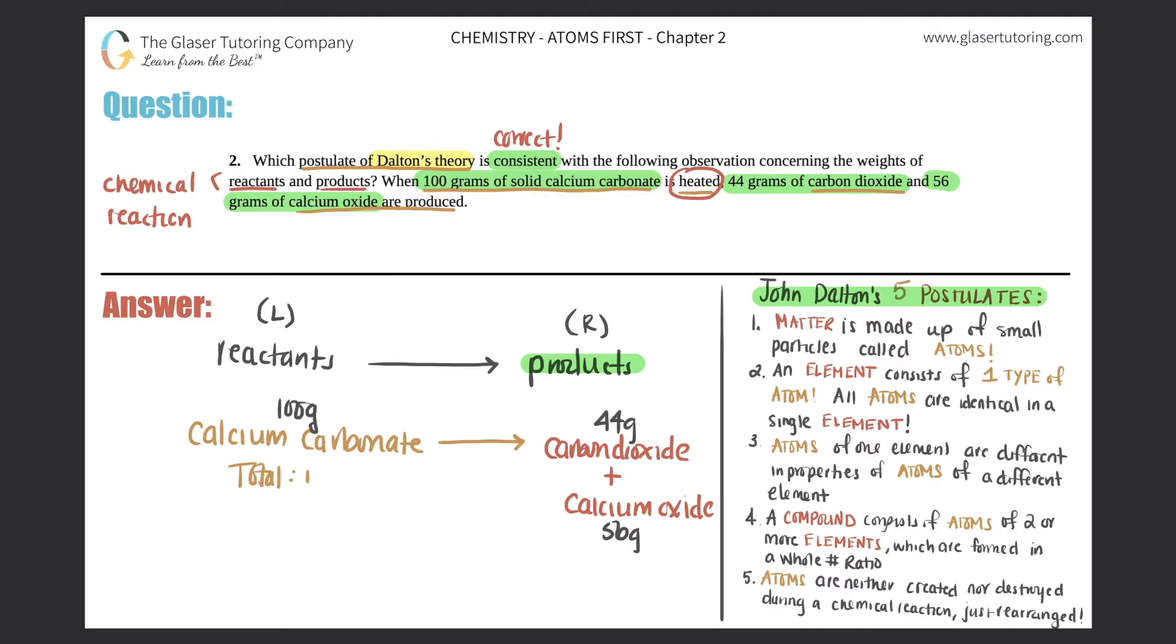And what's the total on my product side? Well, it's the 44 grams plus the 56 grams, the 44 grams of carbon dioxide and the 56 grams of calcium oxide. What does that equal? Well, when we add them up, that equals 100 grams.